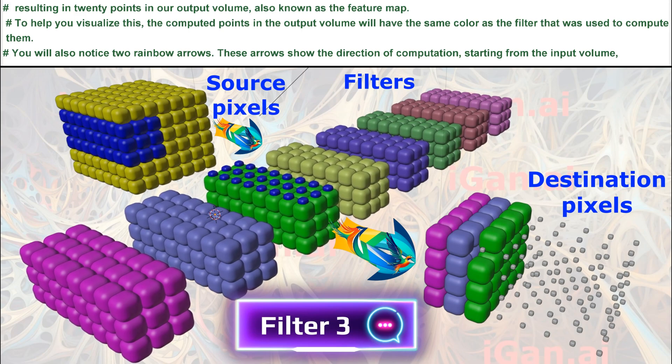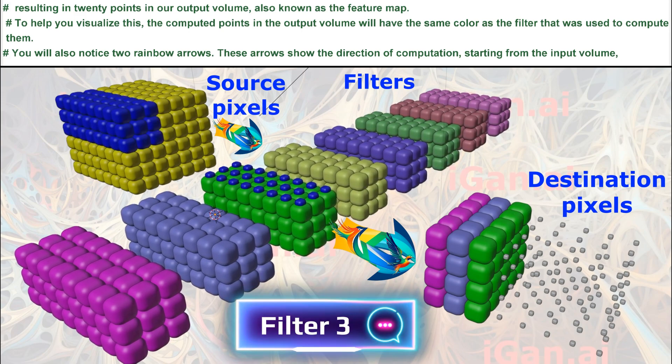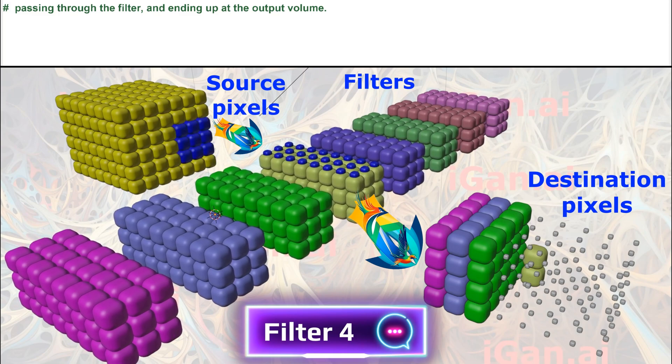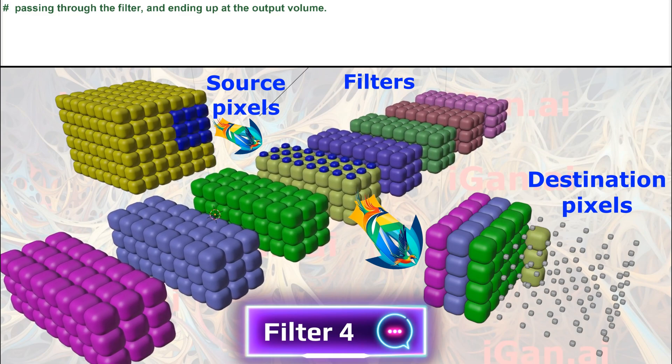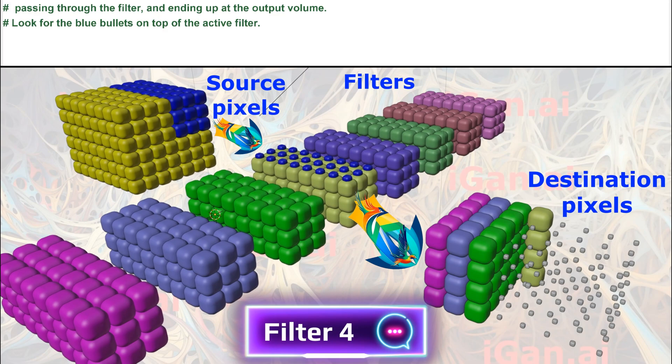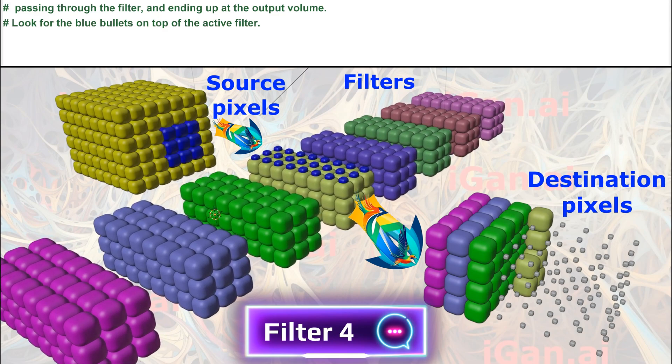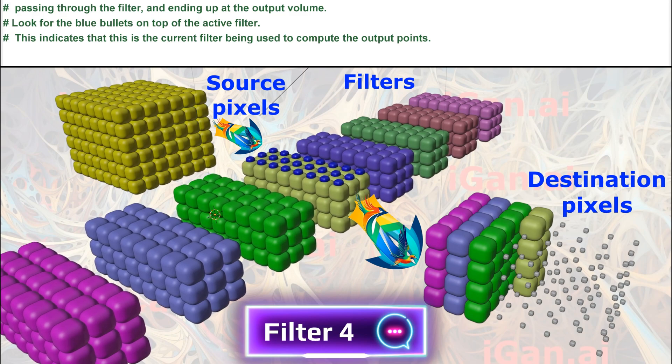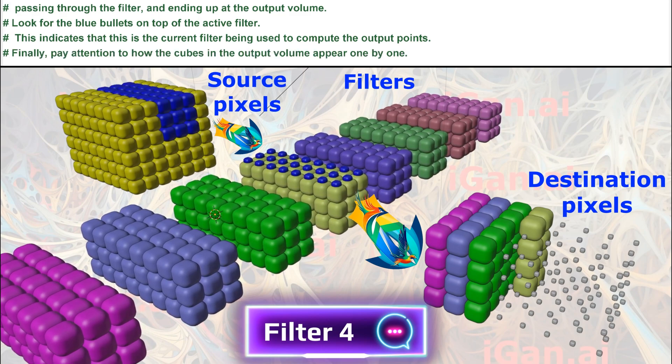You will also notice two rainbow arrows. These arrows show the direction of computation, starting from the input volume, passing through the filter, and ending up at the output volume. Look for the blue bullets on top of the active filter. This indicates that this is the current filter being used to compute the output points.